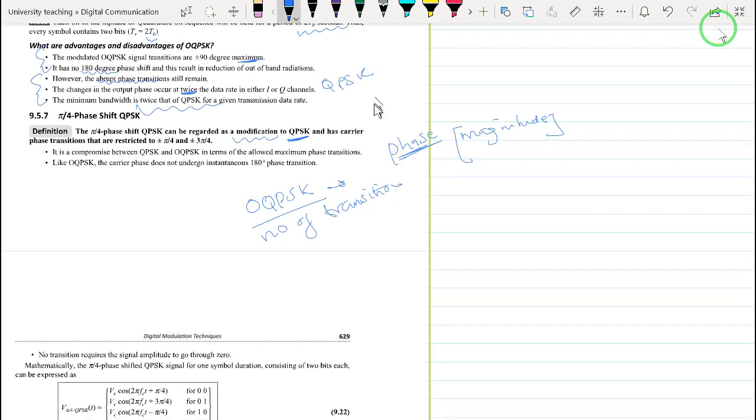The advantages we have discussed: OQPSK caps the phase variation by a maximum of 90 degrees, whereas that of QPSK is capped at 180 degrees. However, the phase transitions still remain for OQPSK, and the output phase transitions are twice as much. Therefore, the minimum bandwidth for OQPSK is actually twice that of QPSK.